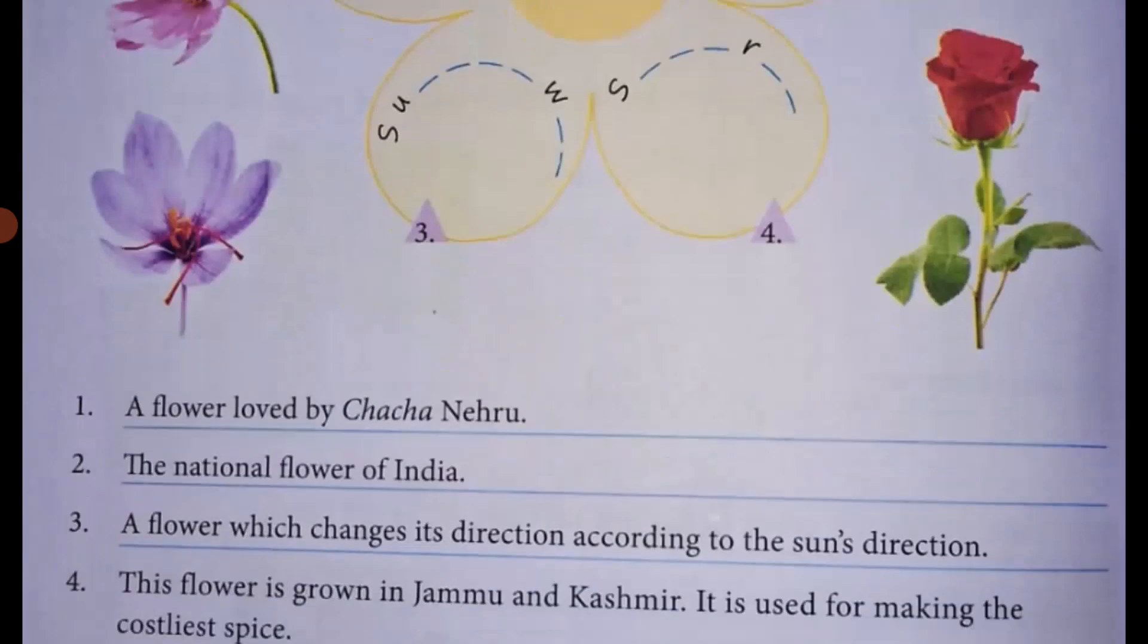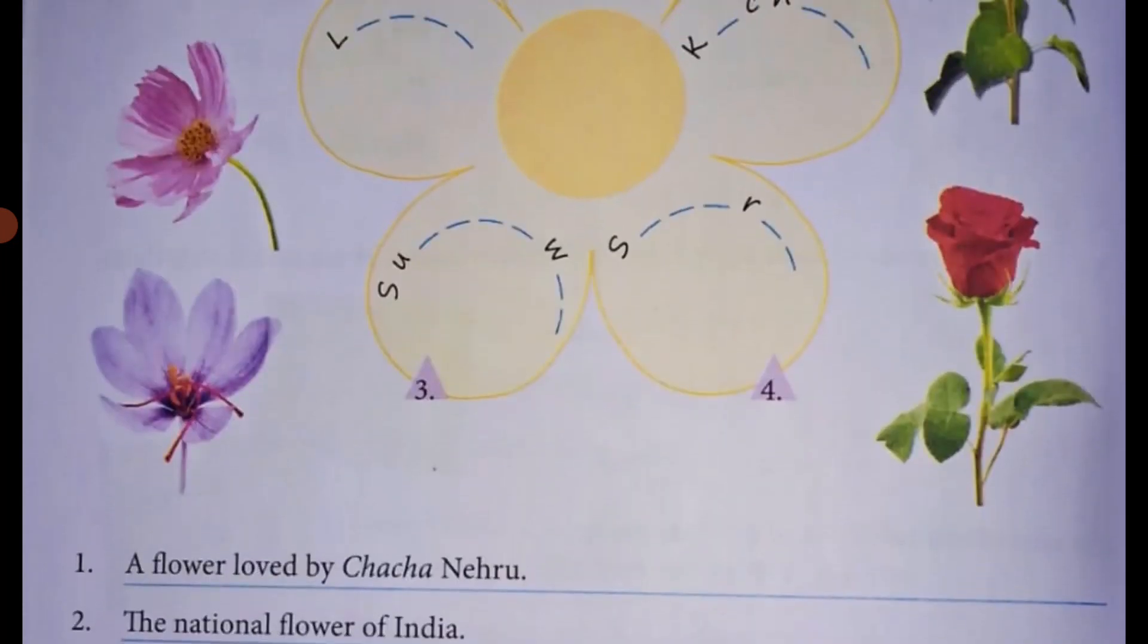Third, a flower which changes its directions according to the sun's direction. The word starts with S-U and the answer is Sunflower. Sunflower.